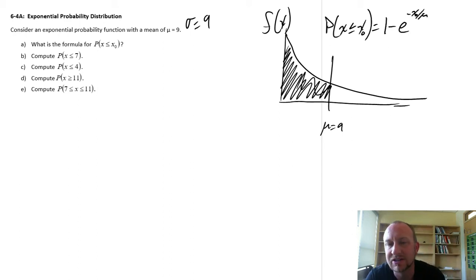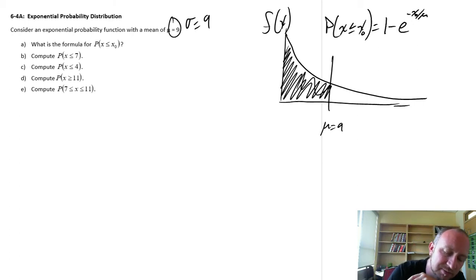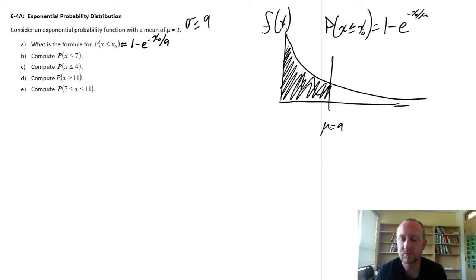So here, the generic version, P(x ≤ x₀) would be 1 minus e to the negative x₀ divided by μ. So that's our generic function for calculating these probabilities. But we know what μ is, so we can substitute that in. I'm going to change this question mark to an equal sign. This is 1 minus e to the negative x₀ divided by μ, which I know is 9.